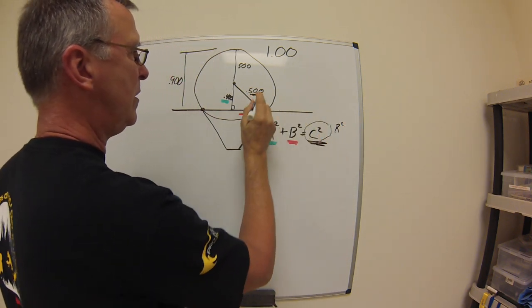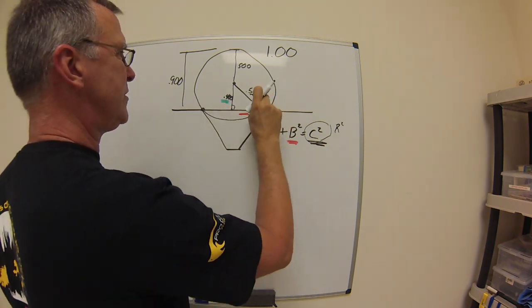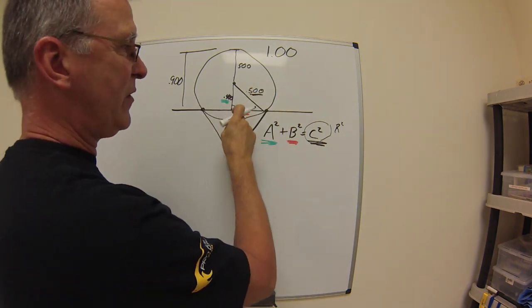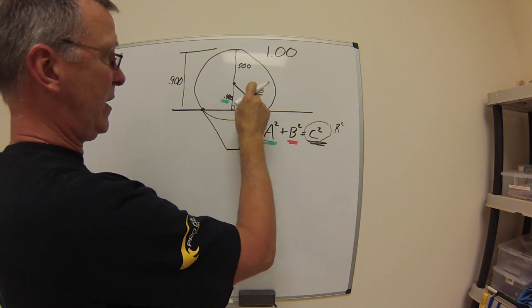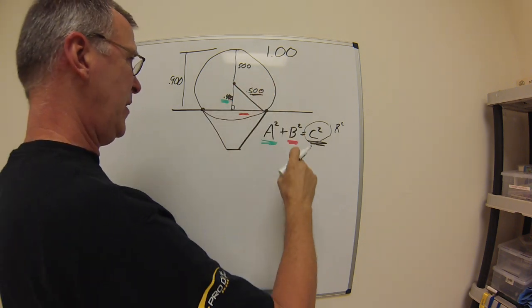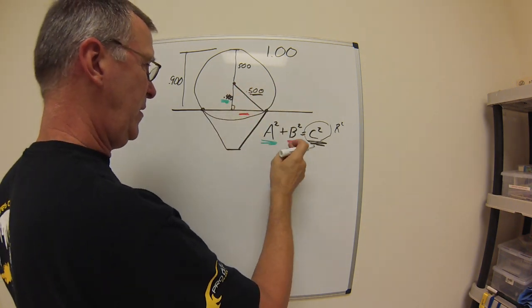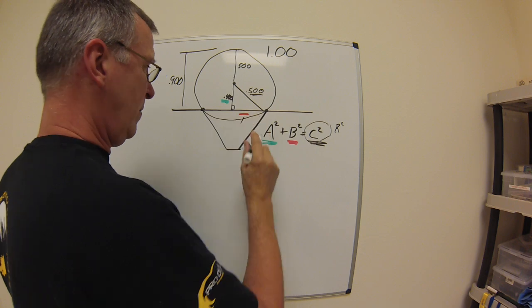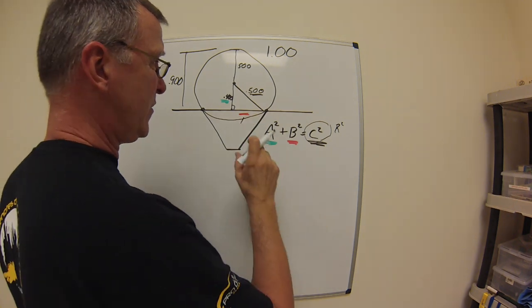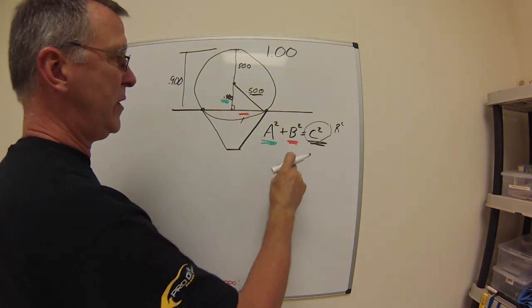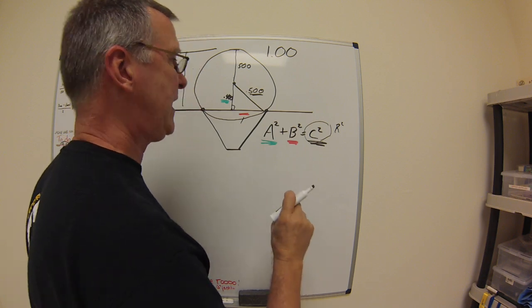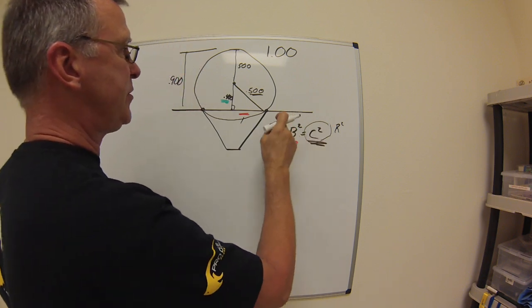Okay. There you go. A squared plus b squared equals c squared. So let's say you don't have this one right here. Well, you take a squared and c squared and you subtract the two and then that gives you b squared. Now, make sure that you take the square root of that value because you're looking for a value that is squared. All right. A squared, b squared, c squared.